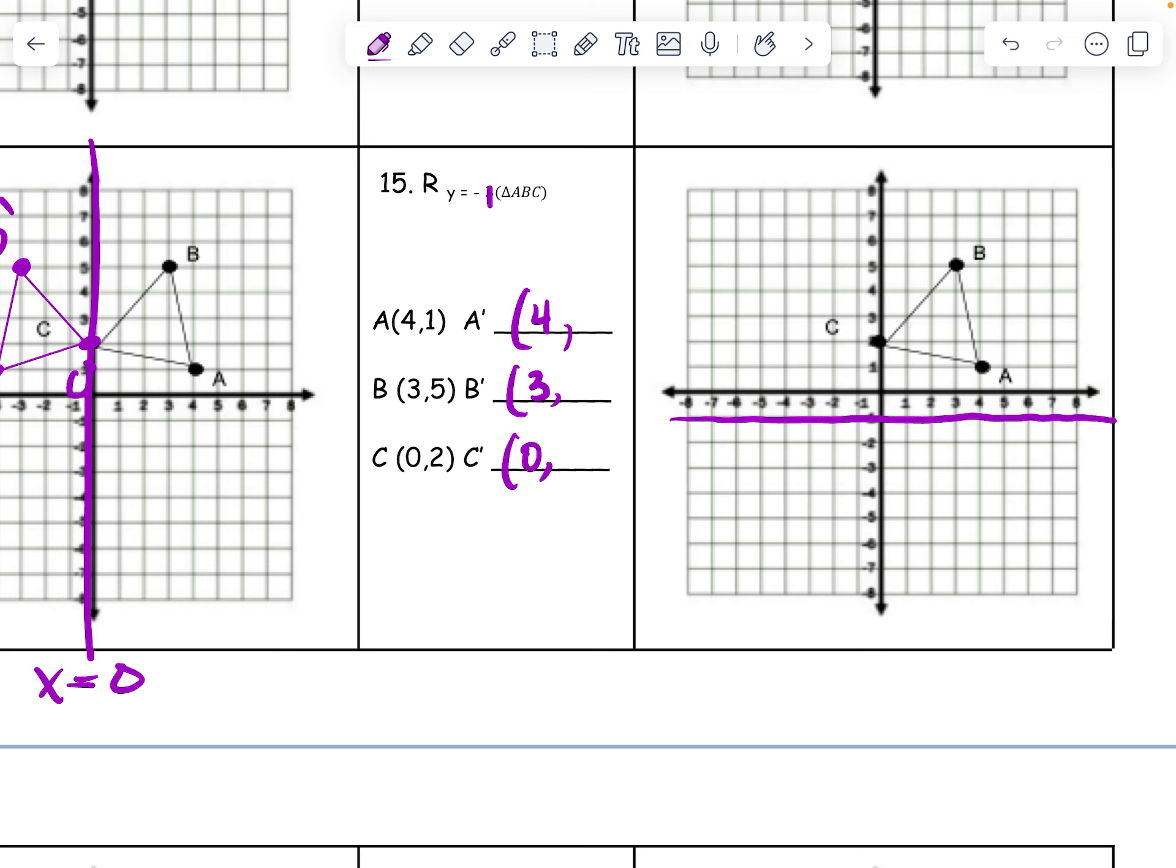And I can double check and make sure that makes sense. So let's see, a is 2 away. So make a 1, 2 away again. So a is at 4, negative 3. b is 5, 6 away. So I need to go down 6 more. b prime is at negative 7.